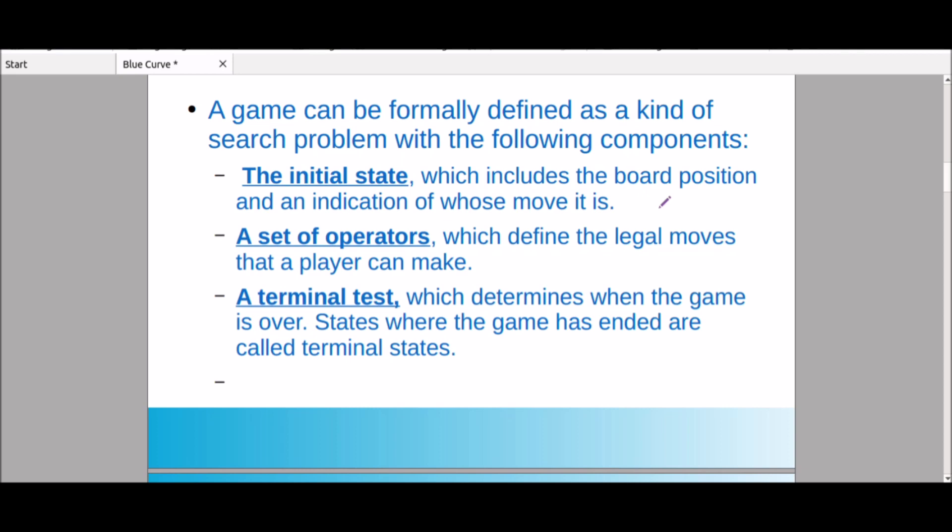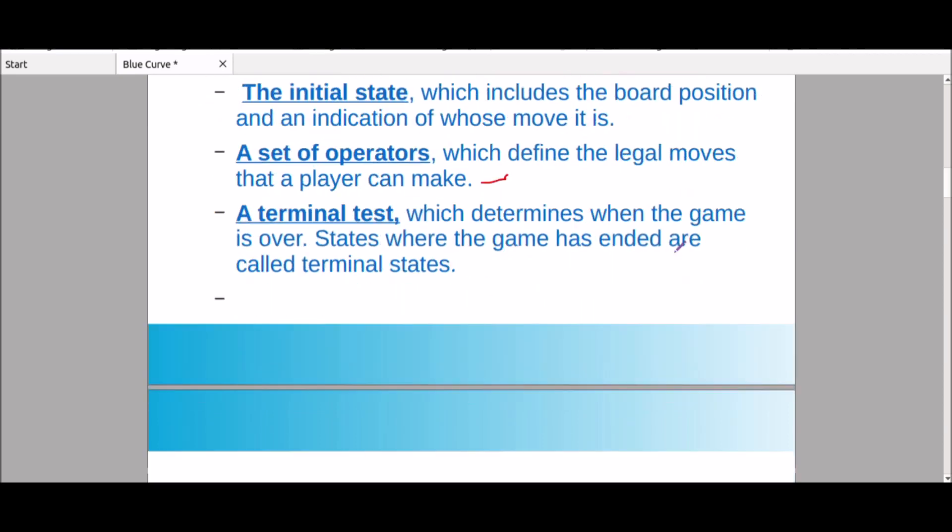There are some rules, some starting positions, so that is called initial state. Next, set of operators. Set of operators are some legal rules. King is just one step, there are some final steps. Soldier can go first step only one step, so restricted. We have set of operators. Next is terminal test.